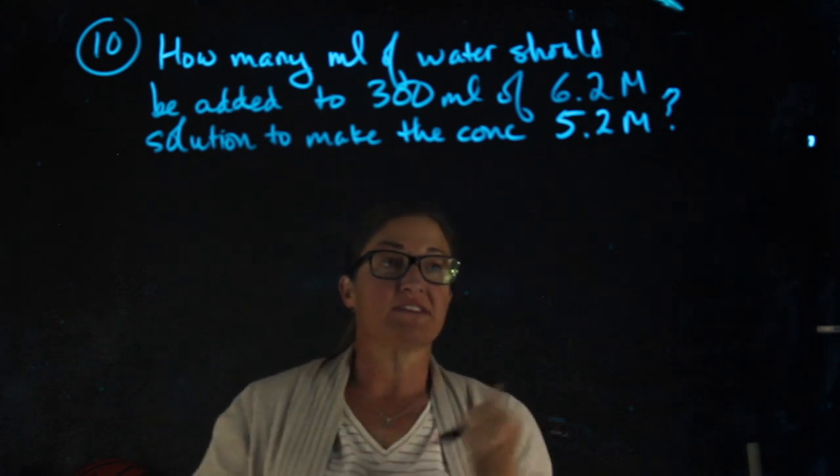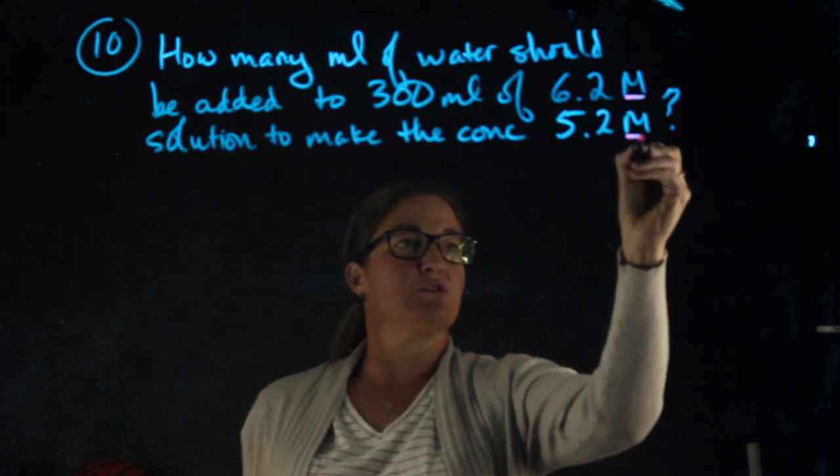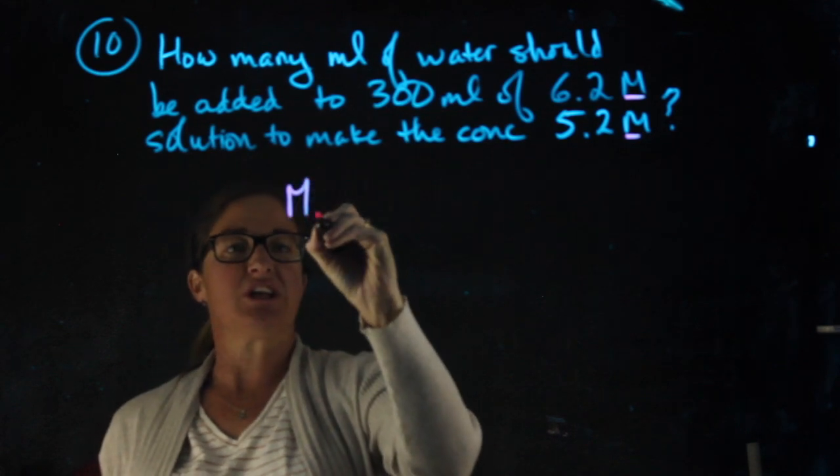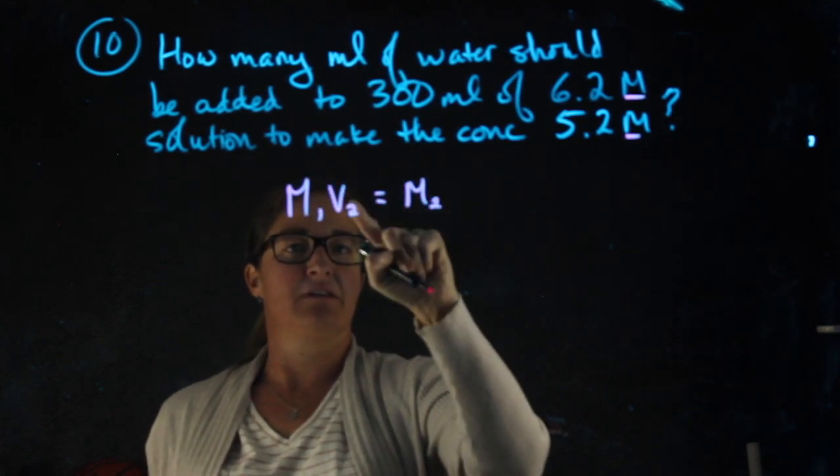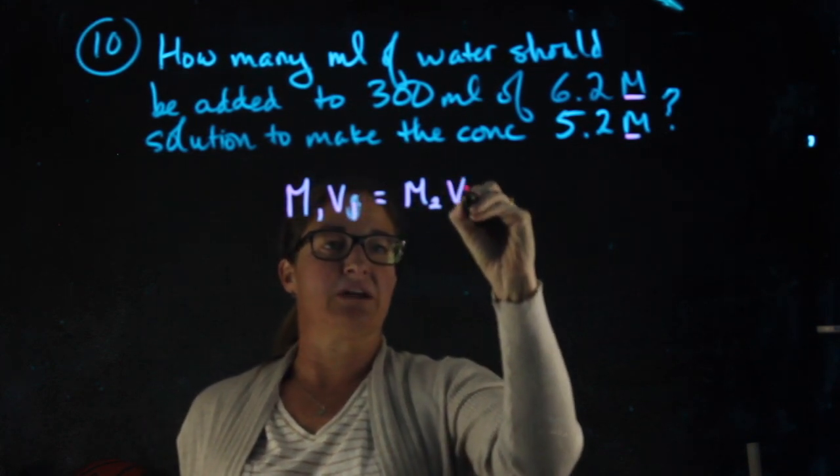Like the last problem, this is a dilution. We're given two molarities. If we're mentioning two molarities or two volumes and we're adding water to it, we will be doing a dilution.